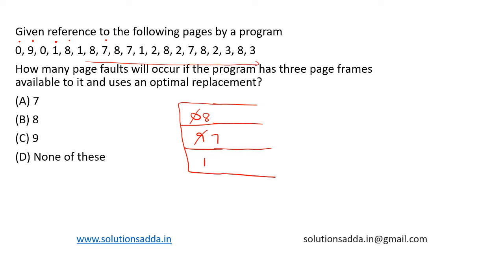Now eight is a hit, seven is a hit, one is a hit. Two is a miss. We'll replace among eight, seven, or one. Eight will not be replaced, seven also will not be replaced. Since one is not being used in the future, we replace one and put two.